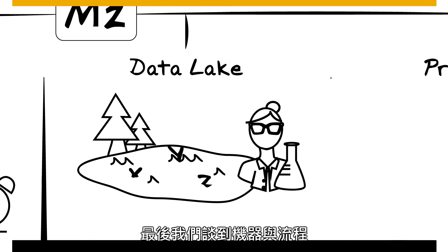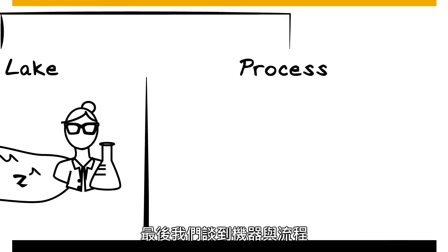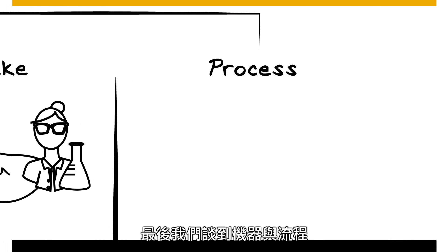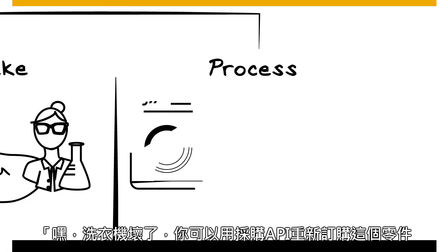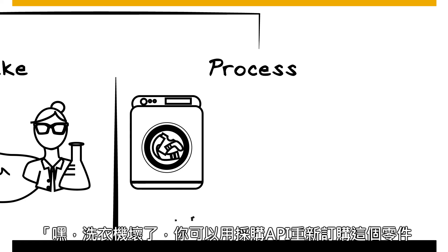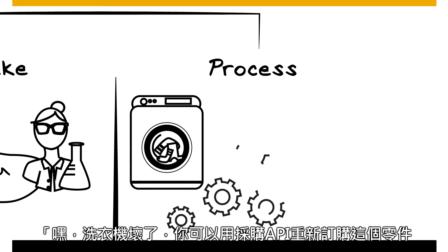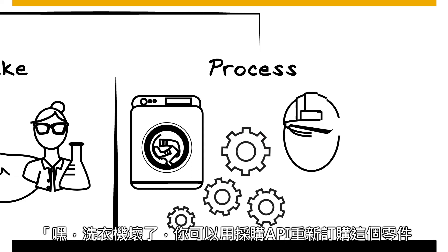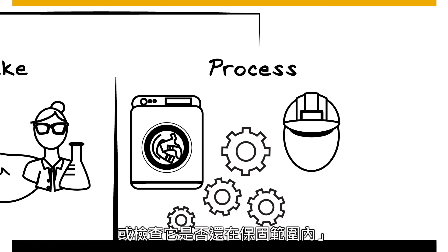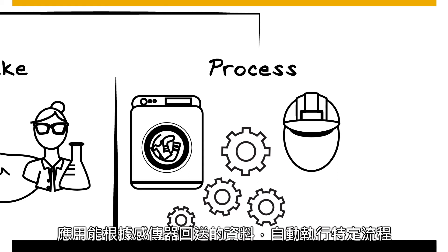And finally, you have machine-to-process. This is the scenario where a part in your washing machine breaks — can you reorder the part by calling a business process procurement API, or check if it's under warranty? It's just taking action based on information coming off a sensor.